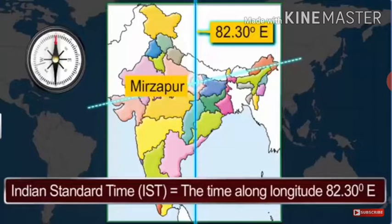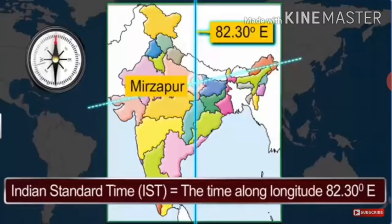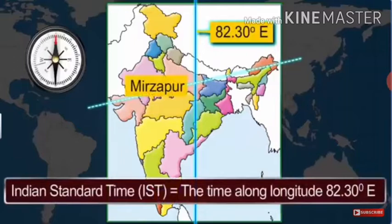The sun rises two hours earlier in Arunachal Pradesh as compared to Gujarat in the west, but the watches show the same time. How does this happen? Because the standard meridian of India passing through Mirzapur in Uttar Pradesh is taken as the standard time for the whole country. The reason for the two-hour difference in local time between the easternmost part of Arunachal Pradesh and the westernmost part of Gujarat is that the local time of a place is calculated on the basis of the overhead sun.